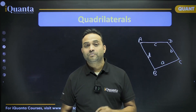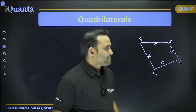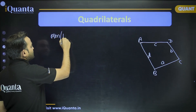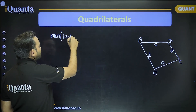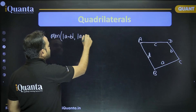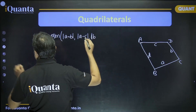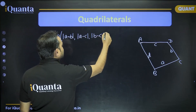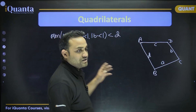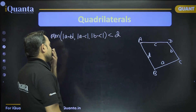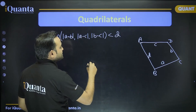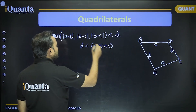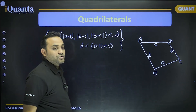Similarly, in a quadrilateral we can say that any side length is greater than the minimum of the absolute difference between any two sides. So the minimum of |a−b|, |a−c|, |b−c| gives a lower bound, and the largest side must be less than the sum of the remaining three sides — so d must be less than a + b + c. These are the two side-length properties you should know for a quadrilateral.